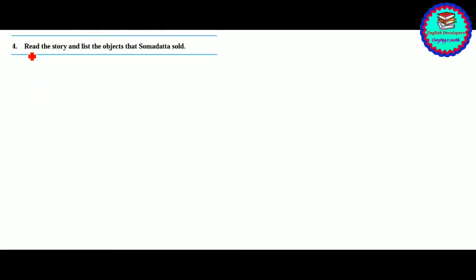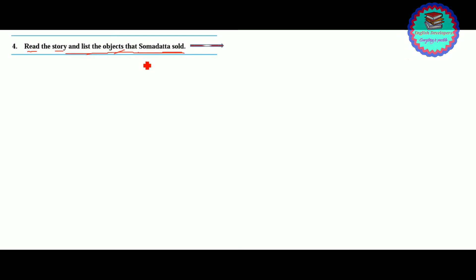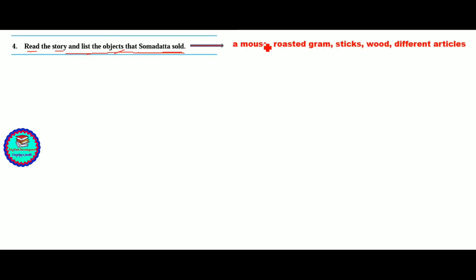Question number 4: read the story and list the objects that Somdatta sold. The answers are: the mouse, the roasted grams, the sticks, the wood, and the different articles.